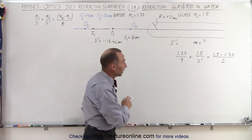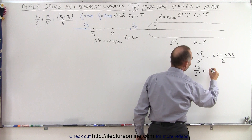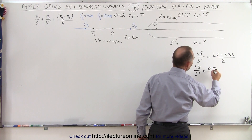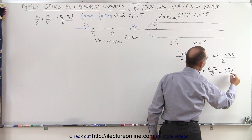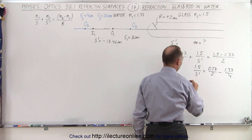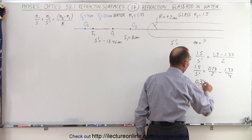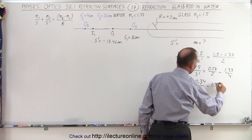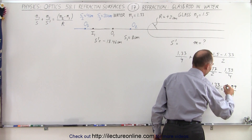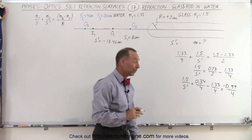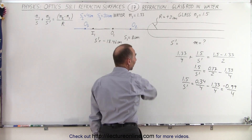Solving for S prime, we get 1.5 over S prime equals 0.17 divided by 2, minus 1.33 divided by 4. The common denominator is 4, so we have 1.5 over S prime equal to 0.34 over 4 minus 1.33 over 4, which equals negative 0.99 over 4, since 1.33 is bigger than 0.34. It looks like again we're going to get a negative result, which means the image is going to be on the same side as the object.